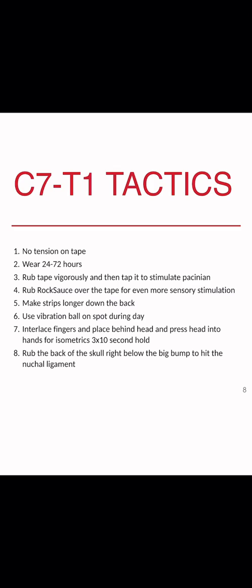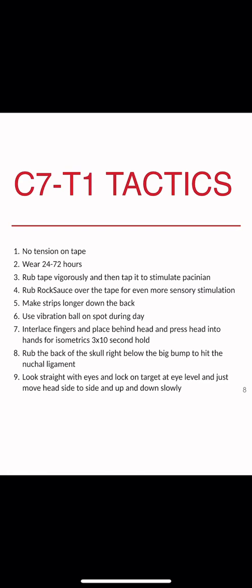Rub the back of the skull right below the big bump to hit the nuchal ligament — go really high up and rub right there for about 30 seconds. Then look straight with your eyes, lock on a target at eye level, and just move your head side to side, up and down slowly, like a pendulum — left to right, left to right, then up and down, up and down, without losing eye contact with your target. That will give stimulation to your vestibular system, which is your inner ear and balance system, and that's a lot of sensory feedback to the brain. If you get really dizzy, slow it down or stop and only resume when you feel better.